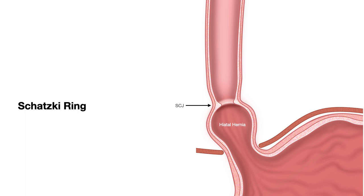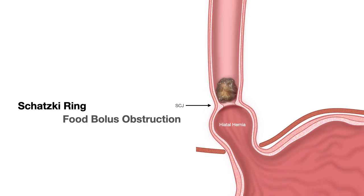When the ring becomes severe and narrows the esophageal opening to less than 13 millimeters, it starts resulting in dysphagia. Sometimes the food can get stuck and result in food bolus obstruction.